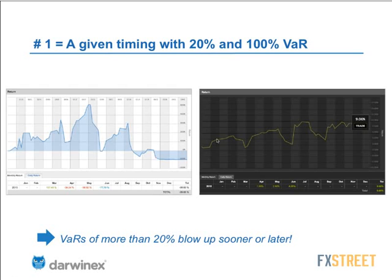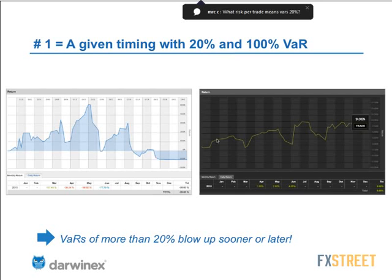Why do values at risk of 20% or more blow up sooner or later? When you're trading with a value at risk of 20%, on a bad month you're going to wipe out at least 20% of your account. Then you're tempted to make good for it — you take more trades than usual, become less demanding in how you take those trades, or put in more leverage. That sends you right down the path to disaster. On the 15th of January, who would have known the Swiss franc would explode? If you were in the market with leverage on the wrong side, you could lose a large portion of your account in a single trade.